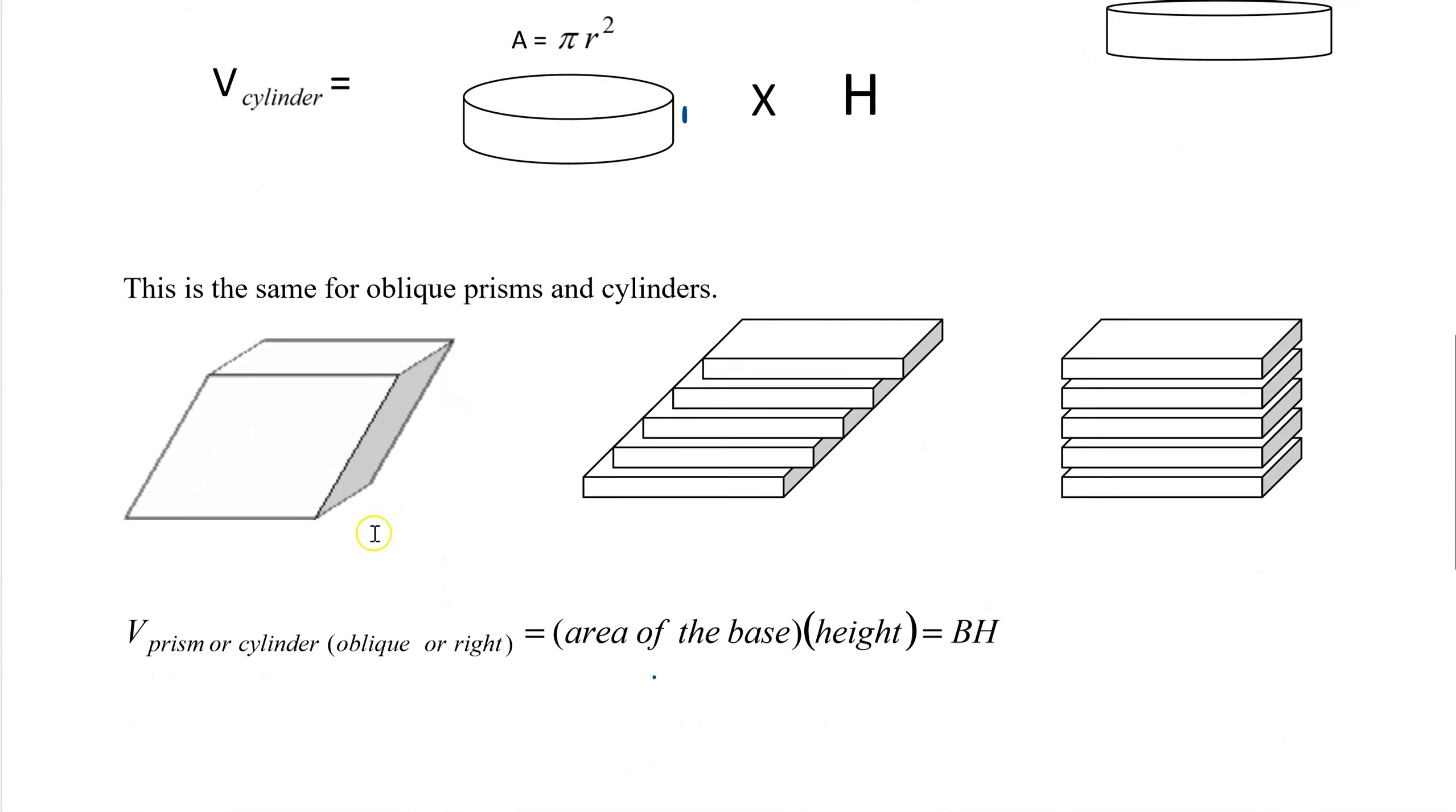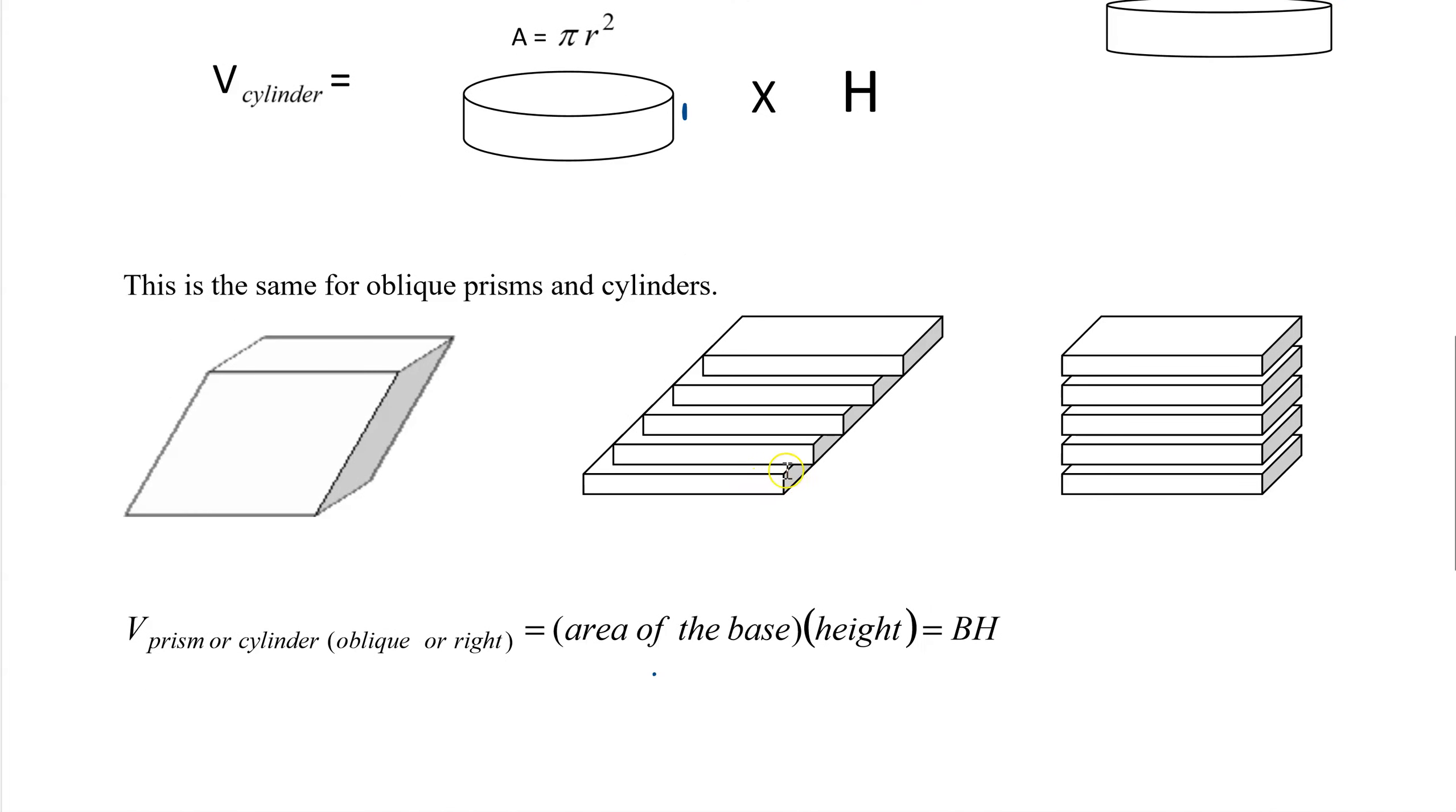Even if it's oblique, it works the exact same way. So here we'd have 1, 2, 3, 4, 5 of these. And so all we need to find is the area of the base and times it by 5. It would be the same way as just stacking it.